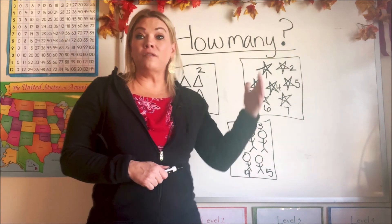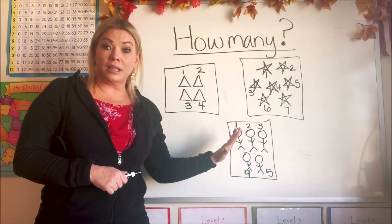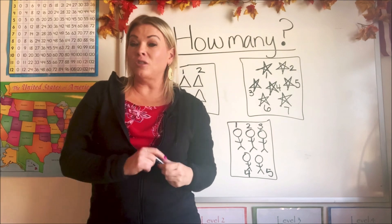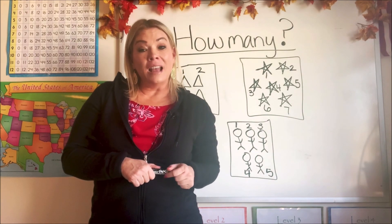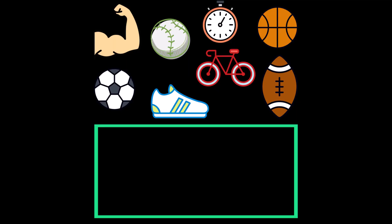Now that we've learned how to look at the different groups, let's look at some other items that I bet you guys might have in your bedroom at home. Can you tell me how many are in these groups? Some of these items we have at my house. Do you see any items you have at your house? Let's go through them. We have a soccer ball, a tennis shoe, a bicycle, a football, a basketball, a clock, a baseball, and a muscle arm. What items do you have at your house?